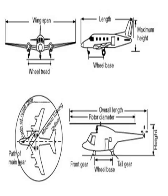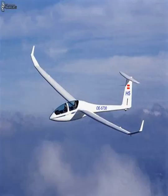Air travel can be separated into two general classifications: domestic and international flights. Flights from one point to another within the same country are called domestic flights, while flights from a point in one country to a point within a different country are known as international flights.